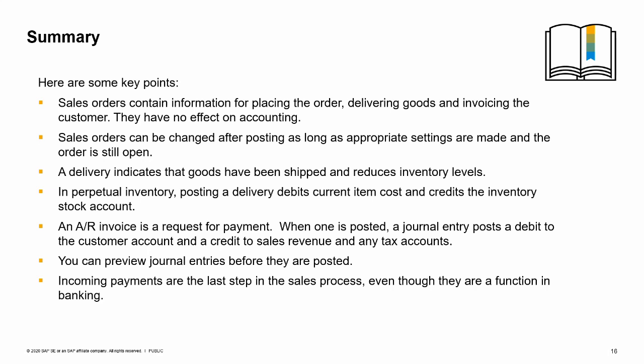Sales orders contain the basic information needed for placing the order, delivering the goods, and invoicing the customer. A sales order has no effect on accounting. Sales orders can be changed after posting as long as appropriate settings are made and the order is still open. A delivery indicates that goods have been shipped and reduces inventory levels. If you are running perpetual inventory, posting a delivery debits current item cost and credits the inventory stock account. An AR invoice is a request for payment; when posted, it creates a journal entry debiting the customer account and crediting sales revenue and any tax accounts. You can preview journal entries before they are posted. Incoming payments are the last step in the basic sales process even though they are a function in banking. You have completed the topic for sales order to cash. Thank you for your time.